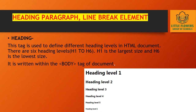Now headings. Heading tags are used to define different heading levels in HTML. There are 6 heading levels in HTML: H1 to H6. H1 is the largest heading tag and H6 is the smallest. H1, H2, H3, H4, H5, H6 — that is how they are used. Heading tags are written within the body tag of the document.